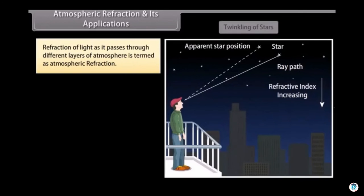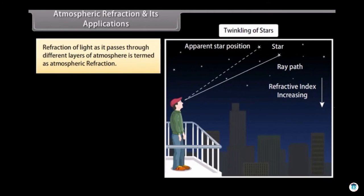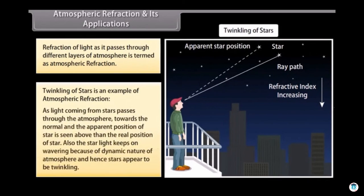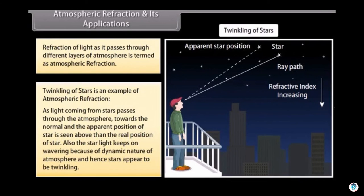Atmospheric refraction and its applications: Our atmosphere is not uniformly dense at any local place. Depending on the local condition, it may have hot and cool air. Near the ground, hot air is lighter than cooler air and hence has lesser refractive index than cooler air. Due to this, starlight or sunlight entering the atmosphere undergoes refraction. This is known as atmospheric refraction. As light coming from stars passes through the atmosphere towards the normal, the apparent position of star is seen above the real position of star. Also the starlight keeps on wavering because of dynamic nature of atmosphere and hence stars appear to be twinkling.